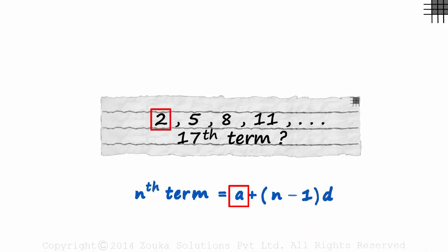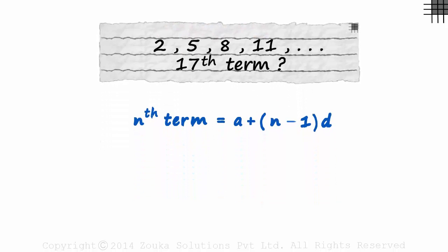A is the first term, N is the term number, and D is the common difference. So finding the 17th term will be pretty easy.